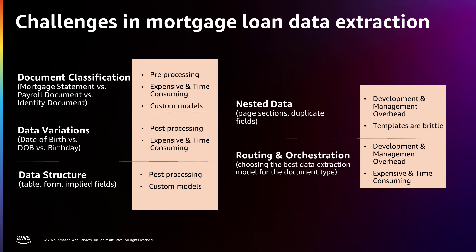The second challenge is data variations. Extracting information consistently is difficult because of the variations in how the data is presented across different document types. For example, birth date can be represented as date of birth, DOB, or birthday in different document types such as passports and loan applications. This means customers end up maintaining a list of synonyms for the fields they are trying to extract from each document type and end up matching those field names across documents, which can be cumbersome and error prone.